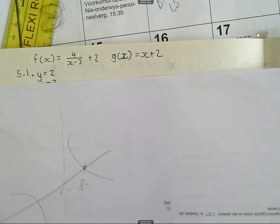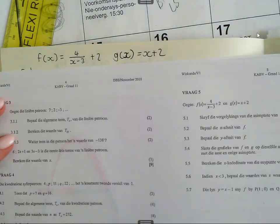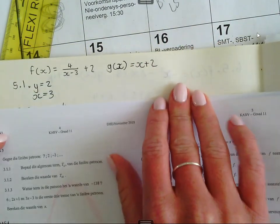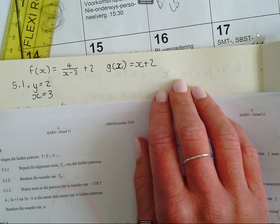Daar is ons die twee vergelykings. Die eerste vraag was gewees om die vergelykings van die asymptote neer te skryf, en dit is net y gelijk aan 2, x gelijk aan 3. Weet jy dat dit so?